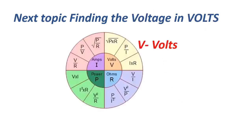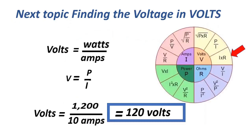The next topic is finding voltage in volts. Volts equals watts over amperes, or V equals P over I. That equals 1,200 over 10, equals 120 volts.